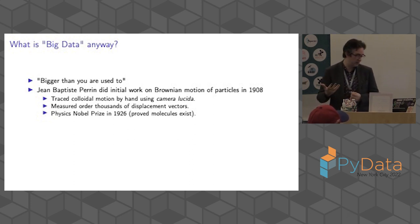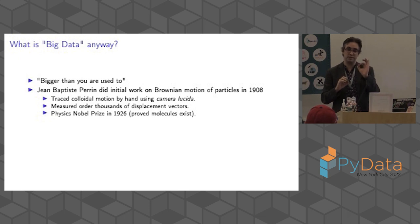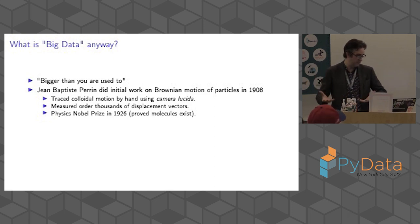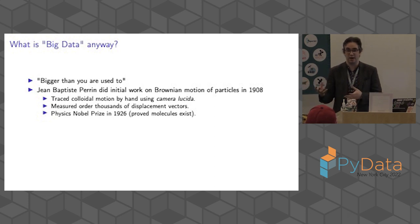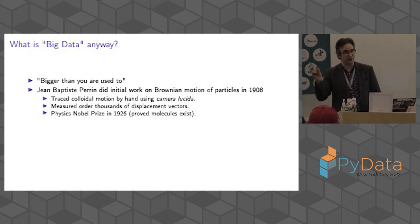An interesting connection to my graduate work: the first measurements of colloids were done by Jean-Baptiste Perrin in 1908. They used a cool physical optical setup called a camera lucida, where in one eye you can see your microscope and in the other you can see a drawing surface. They tracked by hand where the colloids were over time, measuring thousands of displacement vectors. Perrin got the Nobel Prize in 1926 for this work because it proved molecules existed and settled whether the world is continuous or made up of small particles. I also tracked particles undergoing Brownian motion in my graduate work. I did not get the Nobel Prize. However, the first of our keynote speakers tomorrow did.